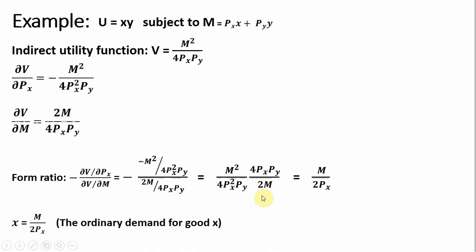Now a lot of things will cancel nicely for us. The 4's will cancel, leaving us a 2, so that's where the 2 comes from. The m squared divided by m just leaves us m. The price of good y divided by the price of good y cancels, so there's no price of good y in the result. And the price of good x divided by the price of good x squared just leaves us with the price of good x. This last result on the far right-hand side is the demand for good x.